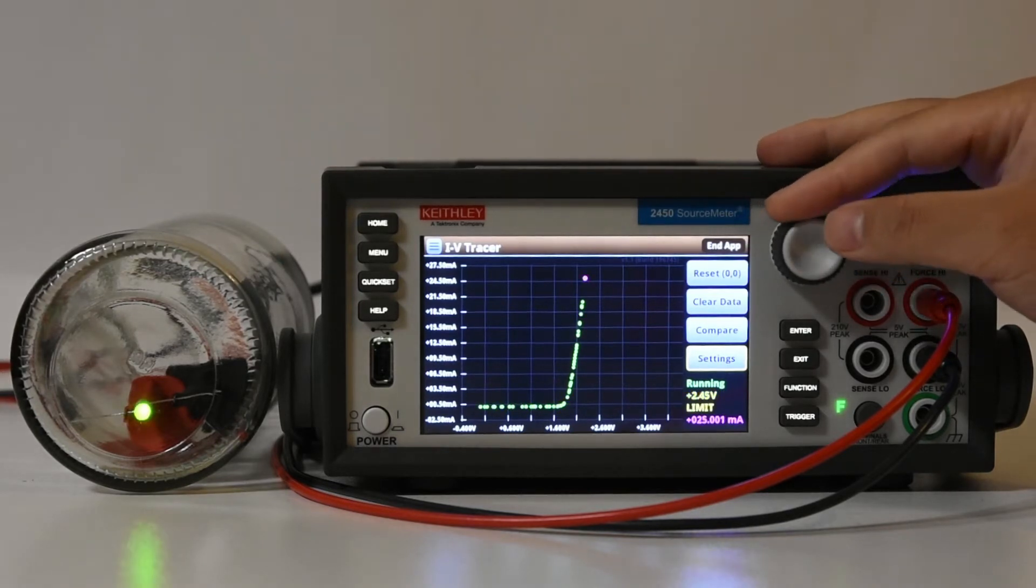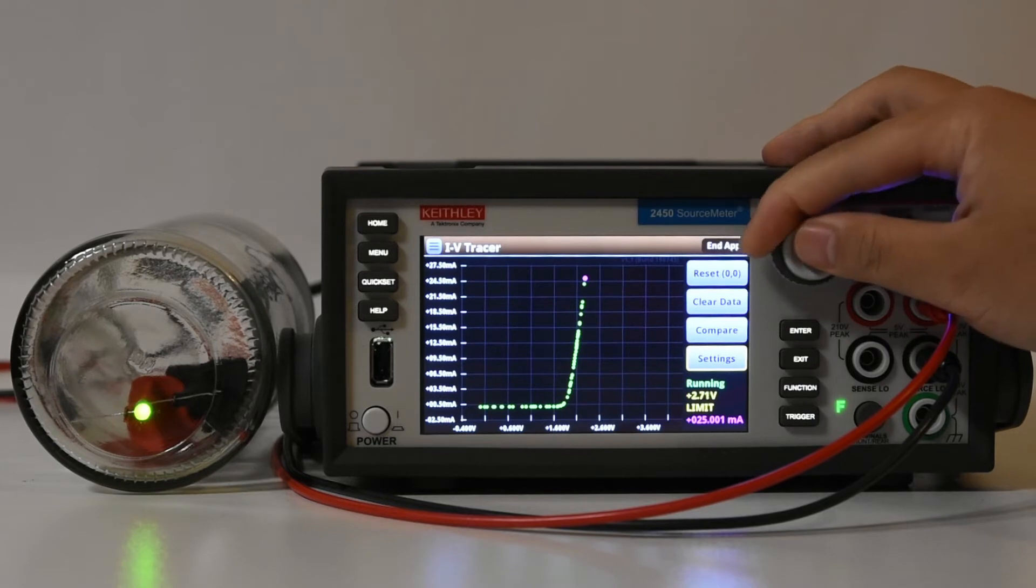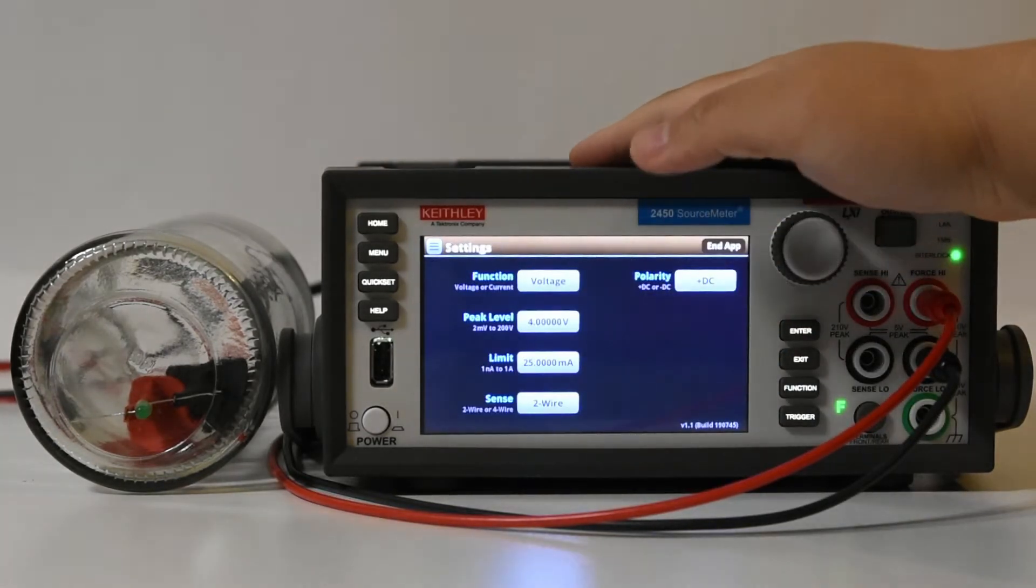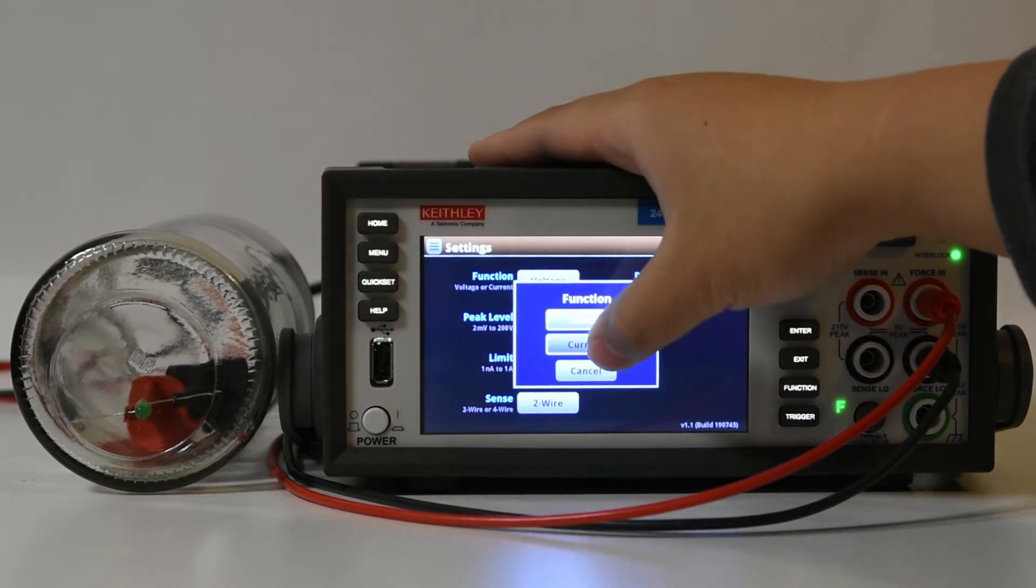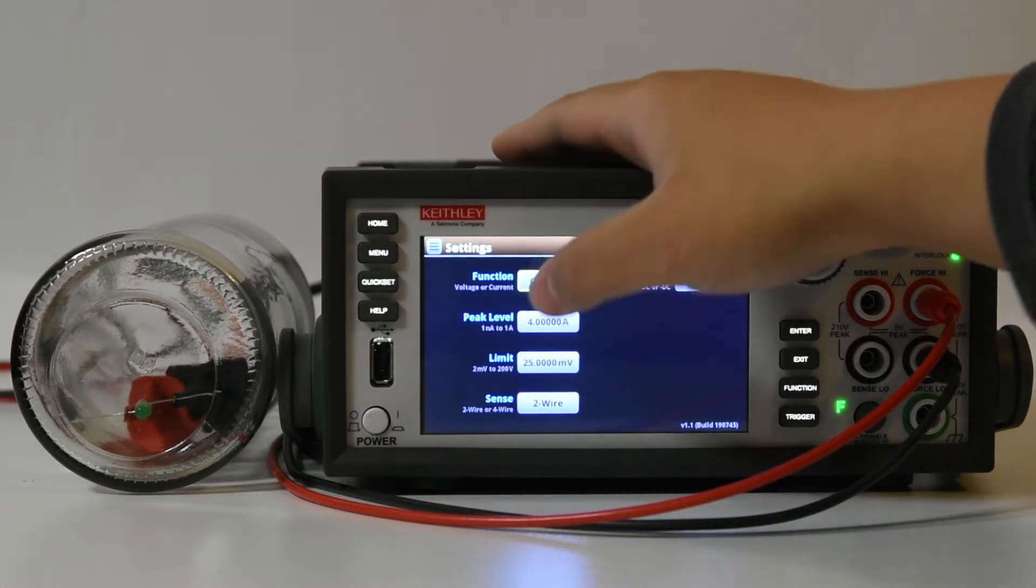This is not quite as smooth as a real curve tracer, requiring much back and forth to get the finer details. It is possible to configure a VI current sweep as well. There seems to be a subtle bug every time the mode is changed, resulting in an error dialog.